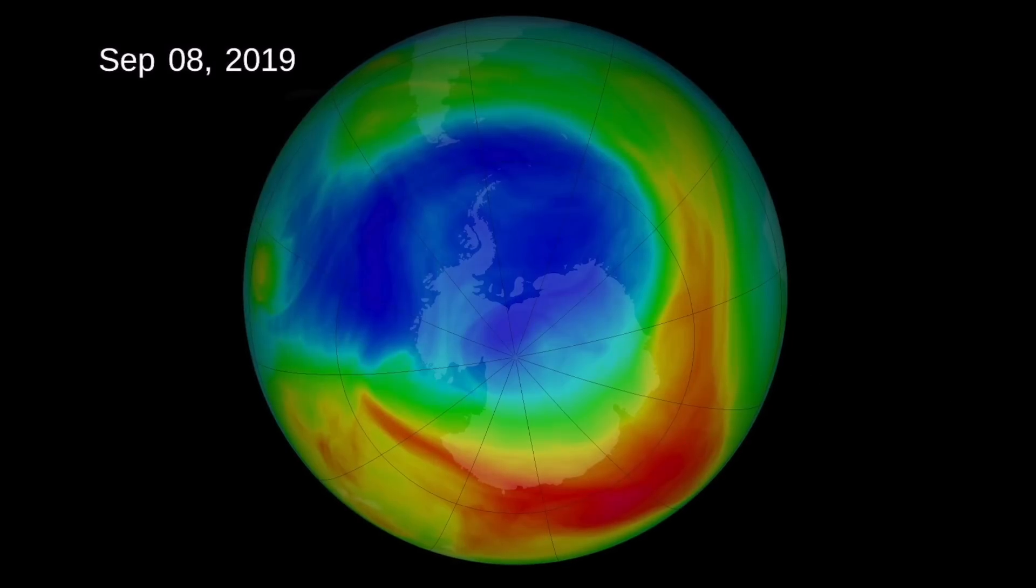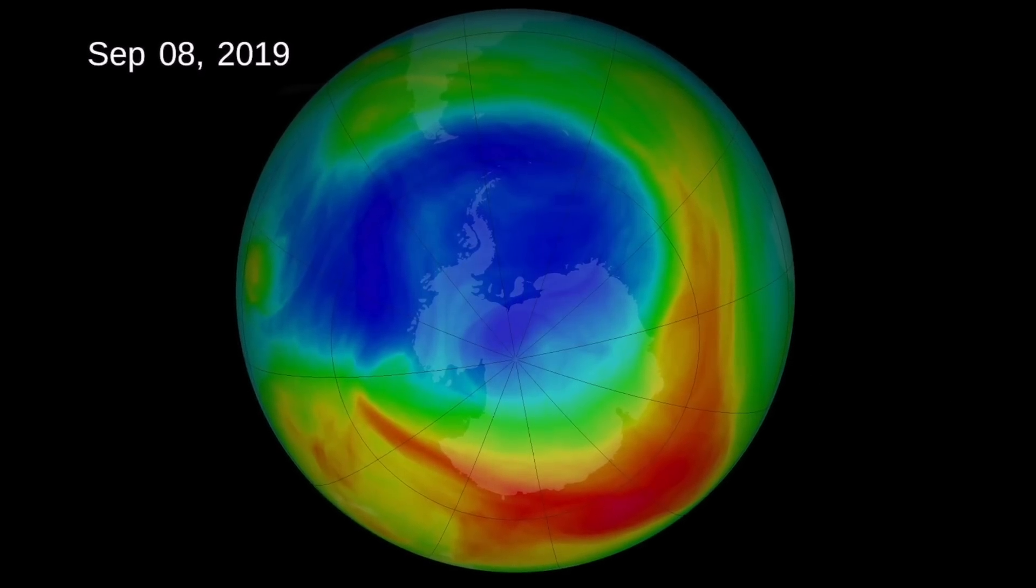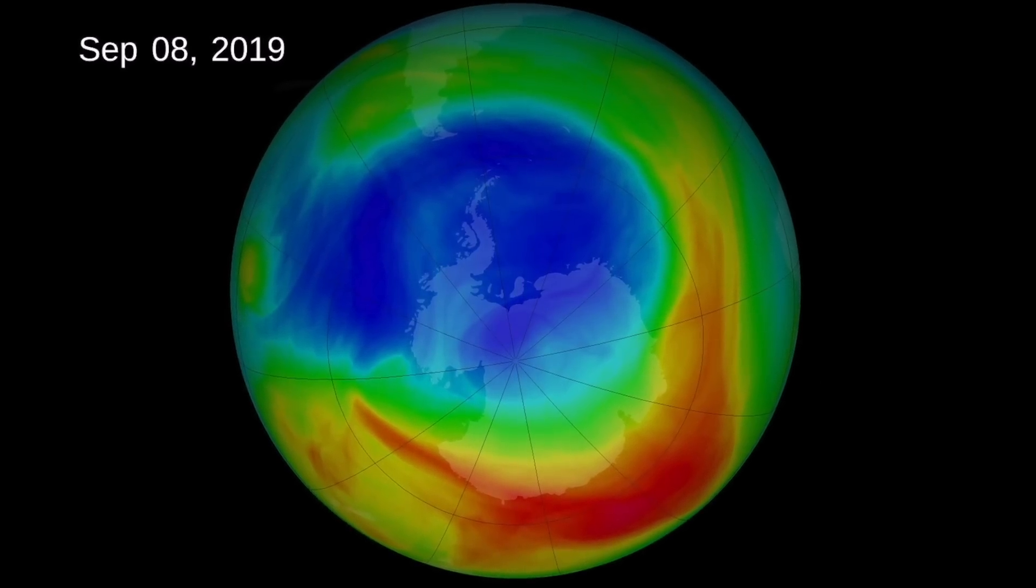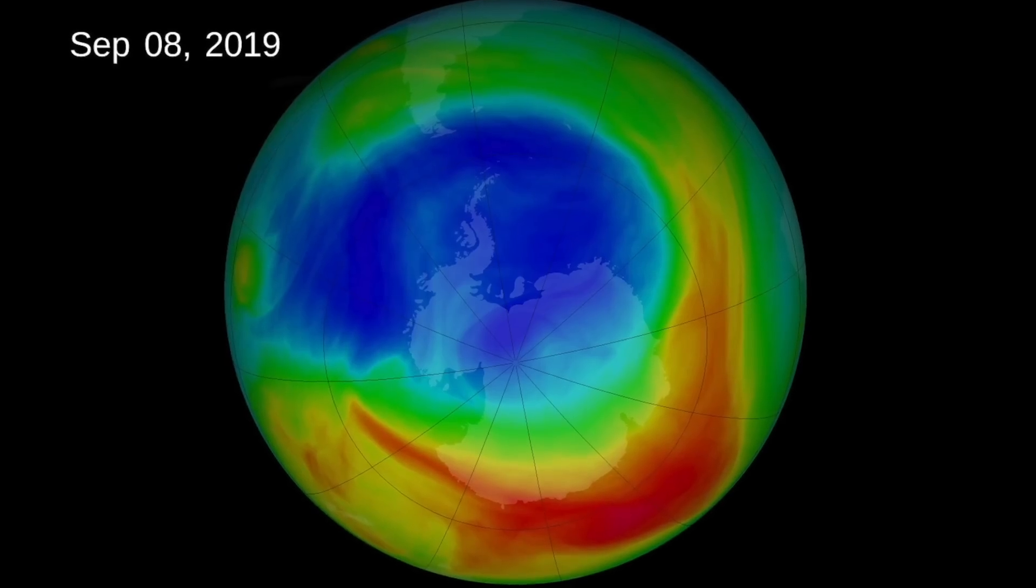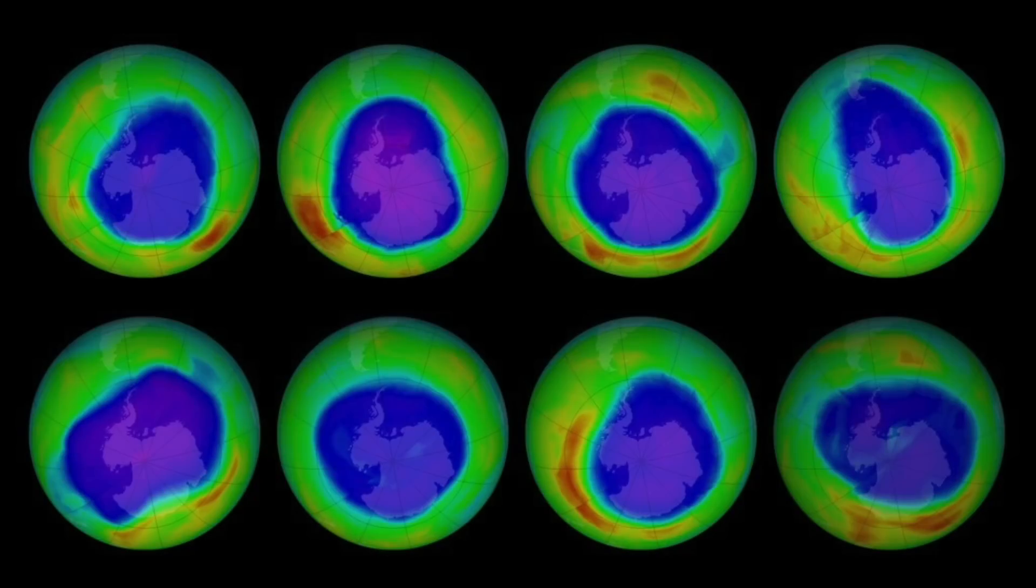Stratospheric ice clouds form in the Antarctic when temperatures fall below minus 78 Celsius, and these clouds promote production of chlorine and bromine, which, when combined with sunlight in the Antarctic spring, causes a reaction that leads to a loss of ozone, resulting in the Antarctic ozone hole.